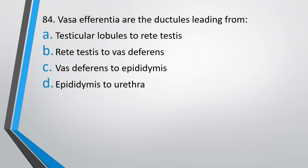Question number 84. Vasa efferentia are ductules leading from: testicular lobules to rete testis, rete testis to vas deferens, vas deferens to epididymis, or epididymis to urethra. The correct answer is option B, rete testis to vas deferens.